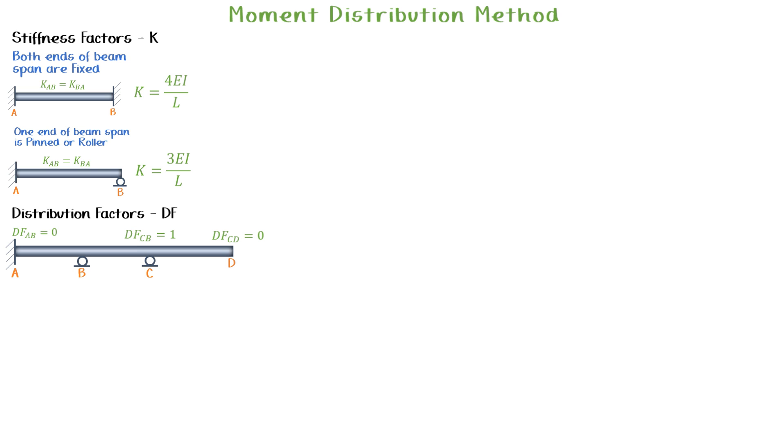Node B is pin, but it is not at the end. It will distribute the moment to nodes A and C. The portion that would be distributed to nodes A and C depends on the stiffness factor of each span and it will be distributed proportionally as follows.